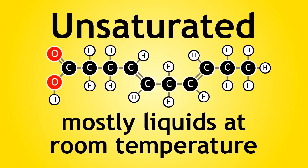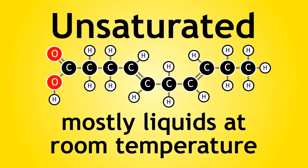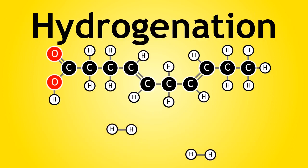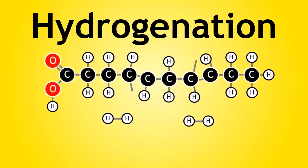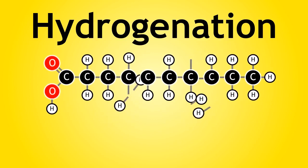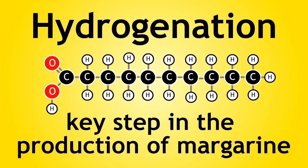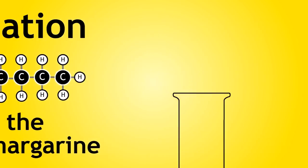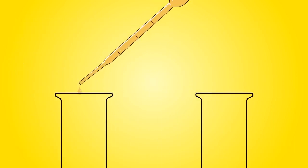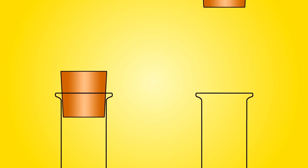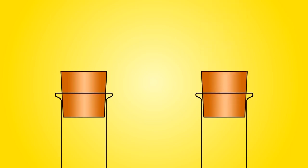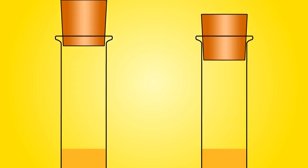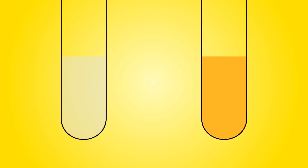These unsaturated oils can be hydrogenated through a process called hydrogenation. This hardens the oil and is a key step in the production of margarine. In the laboratory, one can differentiate between a saturated and an unsaturated oil by testing with bromine water. An unsaturated oil will decolorize bromine water, whereas a saturated oil would not.